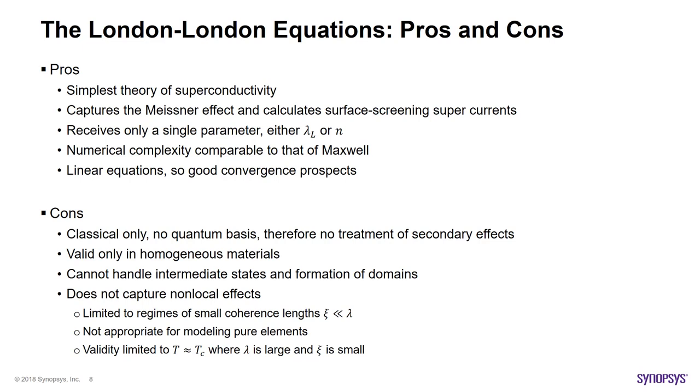However, because this theory is based on classical physics, it has no treatment of secondary effects of quantum phenomena, and it is only valid and homogeneous materials. This last part means that it also cannot handle intermediate states, where different regions of the same material can be in different states of superconductivity. Moreover, this theory is a local theory, meaning that it cannot account for non-local effects. Because of this, its regime of validity is limited to coherence lengths much smaller than that of the penetration depth. This condition does not happen in pure superconductors, therefore London equations cannot be applied to them. Also, in order to have small coherence lengths, the temperature must be high enough to induce scatterings to shorten the coherence lengths, which limits the validity of the theory to temperatures just below the critical temperature of a superconductor.